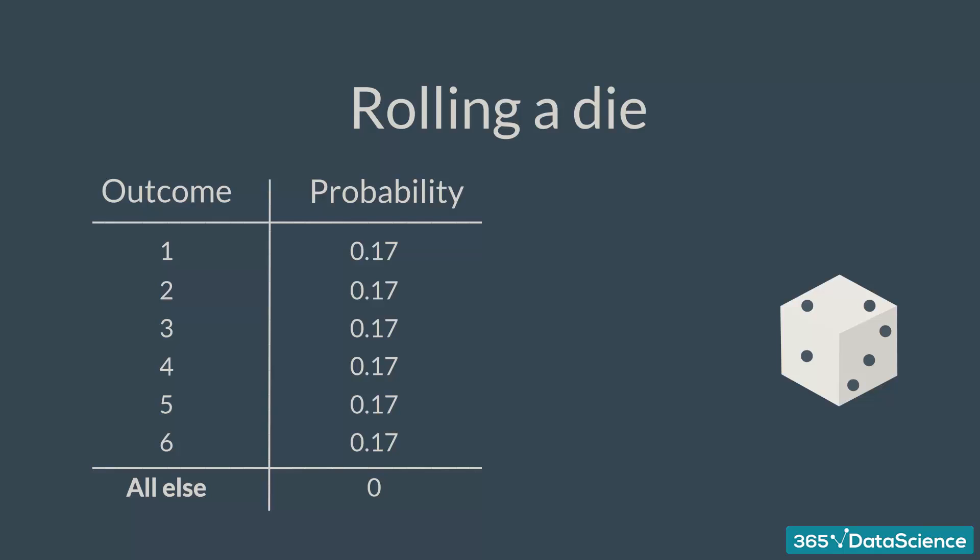You are sure that you have exhausted all possible values when the sum of the probabilities is equal to 100%. For all other values, the probability of occurrence is zero.